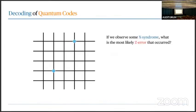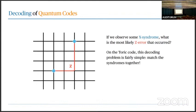When you're in physical hardware you don't see the error directly — you see syndromes. The decoding question is: given these syndromes, how do I find the most likely error correction? In the case of the toric code this is very simple: you find the shortest line segment connecting your syndromes together. This is called minimum weight perfect matching. This has been studied many many times on the toric code.